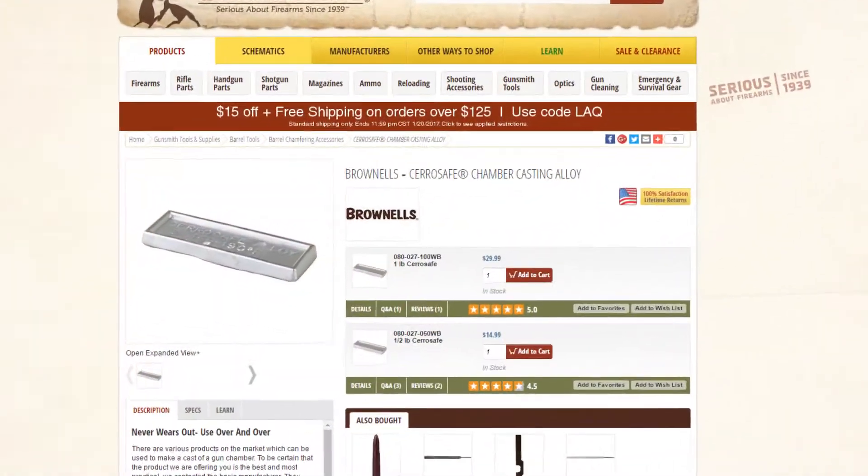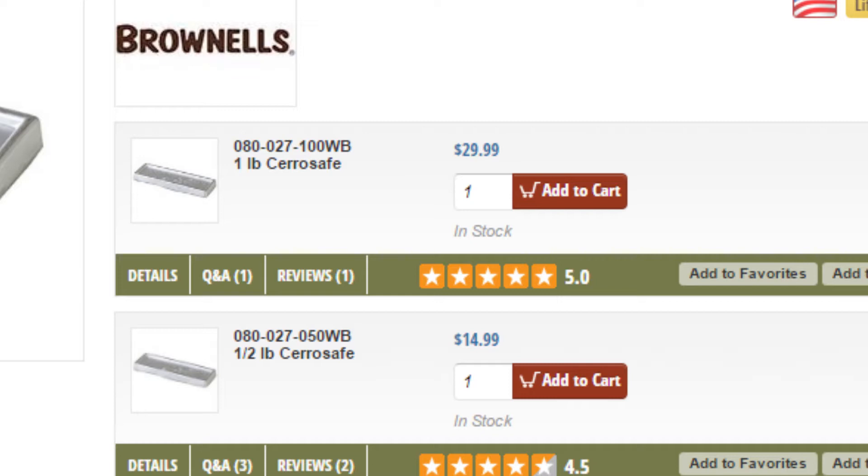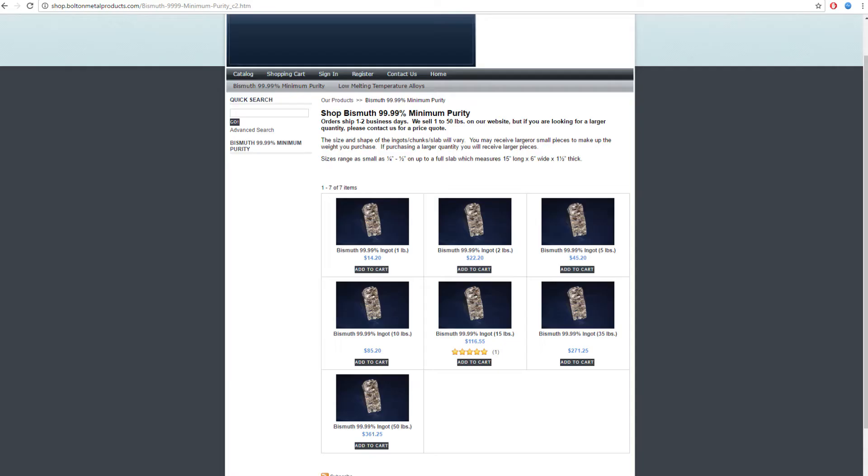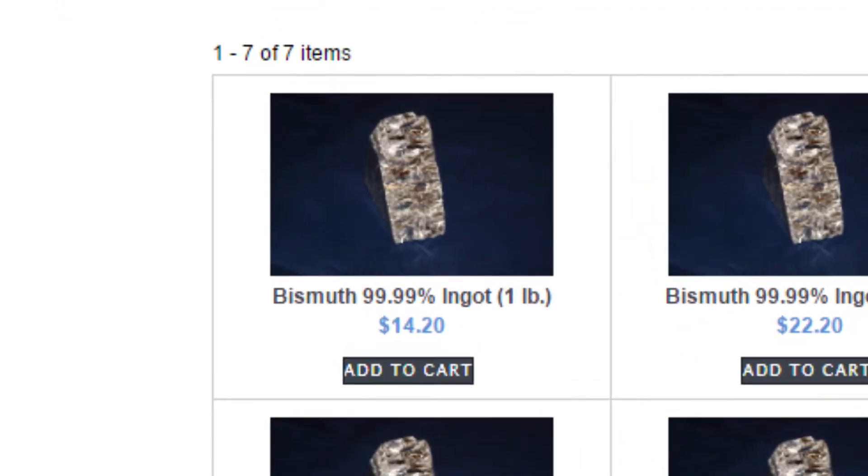But from Brownells for a pound of this, it's $29.99, and then with shipping it's about close to $40. But from Bolton Metals, this was about $14, and with shipping it was right at $20. So quite a bit cheaper, basically half.